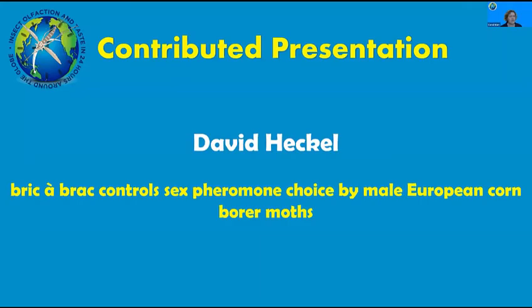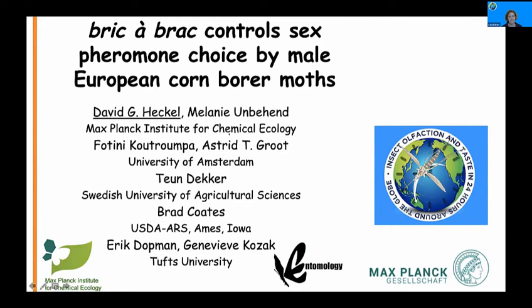Our next speaker is David Heckel from the Max Planck Institute for Chemical Ecology in Jena, Germany, who will talk about sex pheromone choice in male European corn borer moths. David is delighted to join from what he calls the Australian section, having spent many happy years in Melbourne. The European corn borer has been a model system for pheromone studies for many years. The sex pheromone contains only two components differing only in double bond configuration — acetate esters — and the two strains simply differ in relative amounts produced by the female pheromone gland.